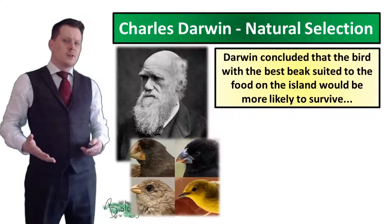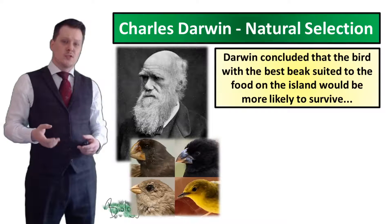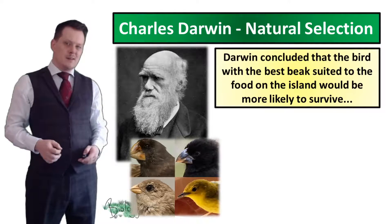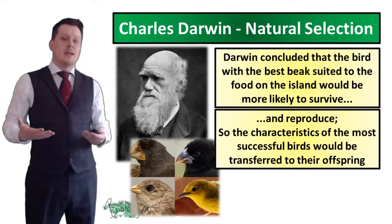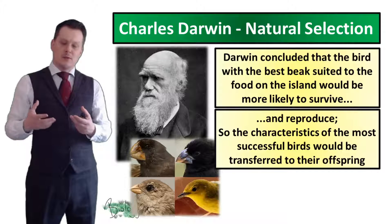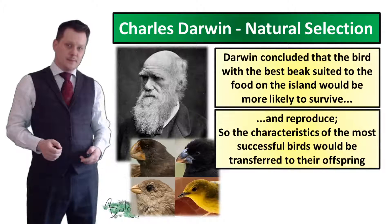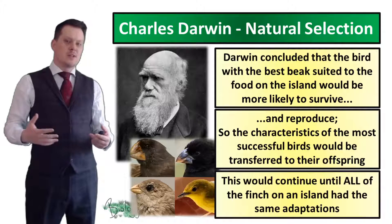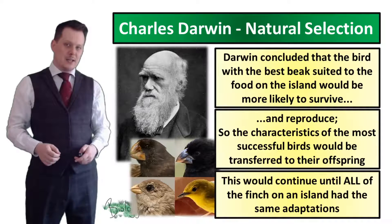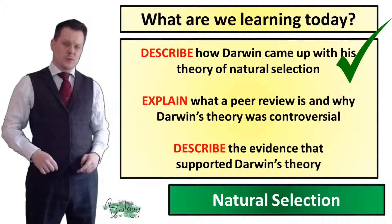Using these observations, Darwin concluded that the bird with the best beak suited to the food on the island would be more likely to survive, and if more likely to survive, more likely to reproduce. Those characteristics of the most successful bird would be transferred to their offspring, and over many generations this would continue until all the finches on the island had the same adaptations. This is how Darwin came up with his theory of natural selection.